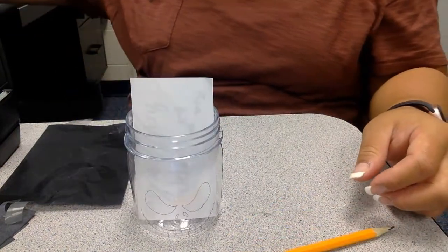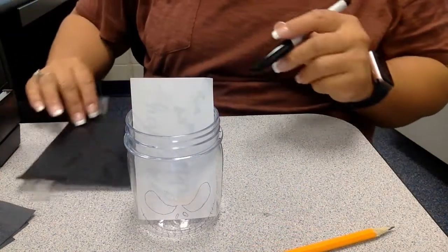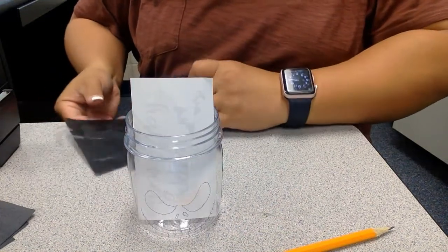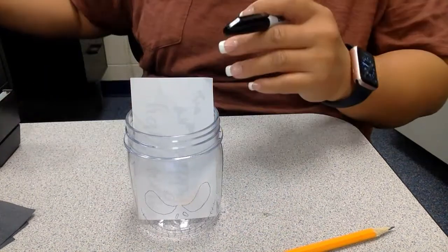Once you take off the tape you'll see that it's very light on the jar but that's okay. I would take a permanent marker, you can also use paint too if you want to, but to make this process go a little faster I'm just gonna go ahead and use permanent marker.